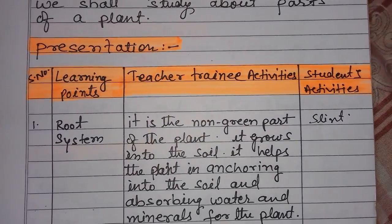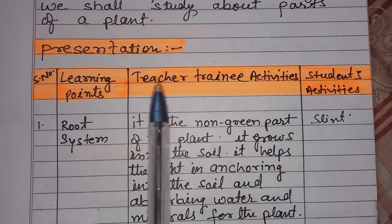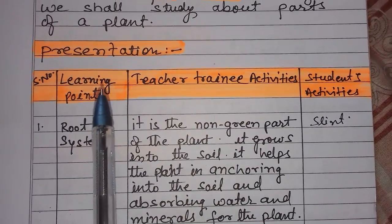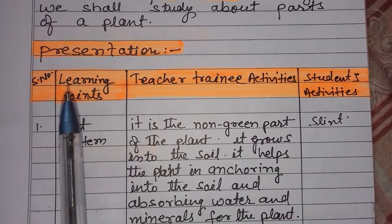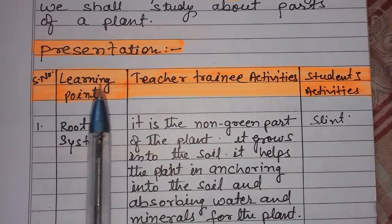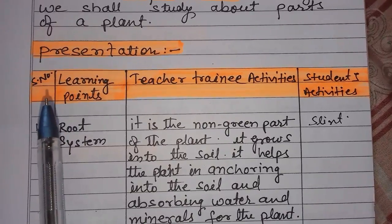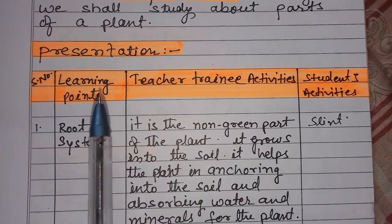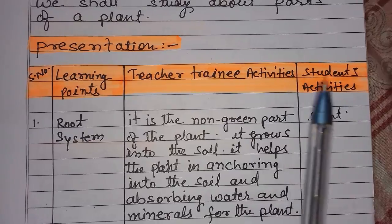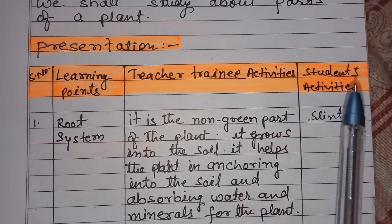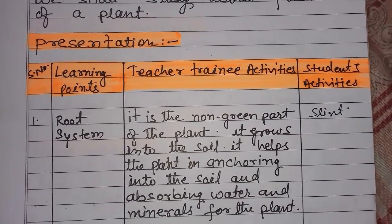Next topic is presentation. It is the main topic. There are four columns: first is serial number, second is learning points, third is teacher training activities, and fourth is students activities.